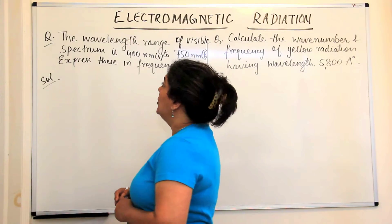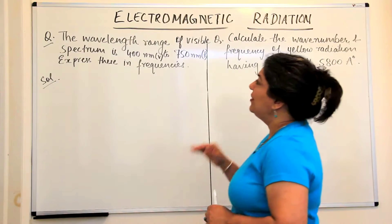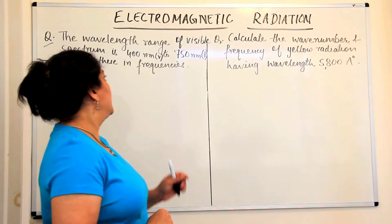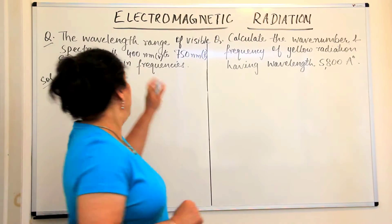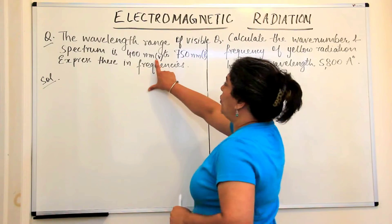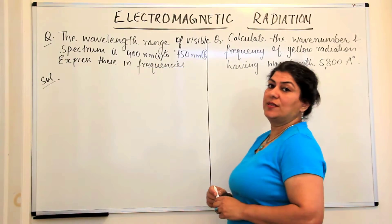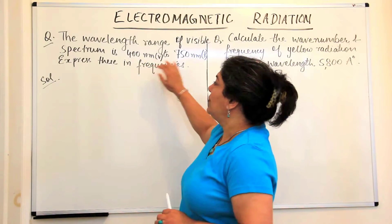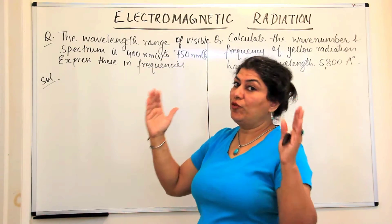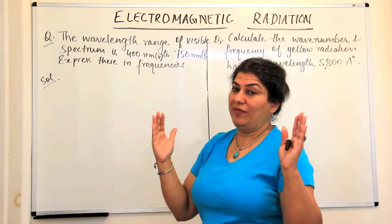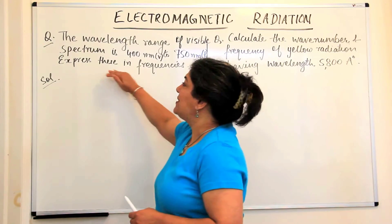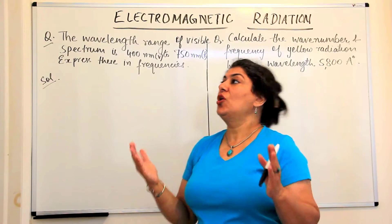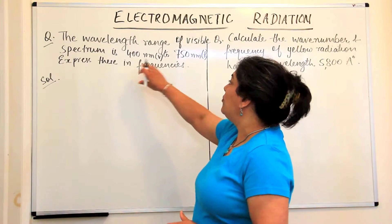The first question is: the wavelength range of visible spectrum is 400 nanometers to 750 nanometers. 400 nanometers is the violet light and 750 nanometers is the red light. So these are the wavelengths of the visible range from 400 to 750 nanometers. You have to express these in frequencies — what would be the corresponding frequency range of visible light? Let us take them one by one.